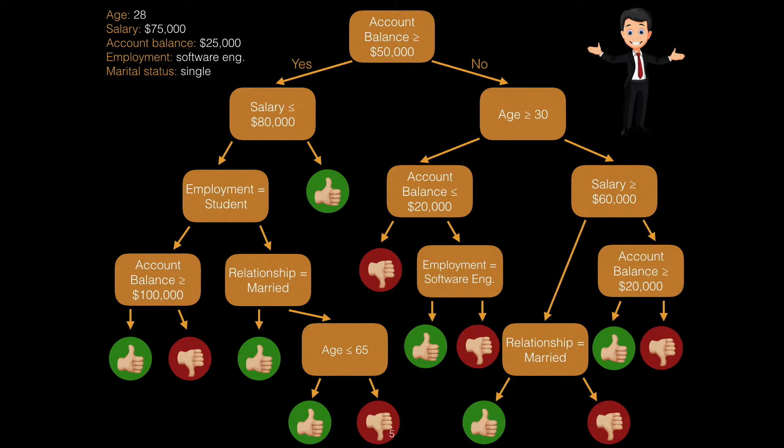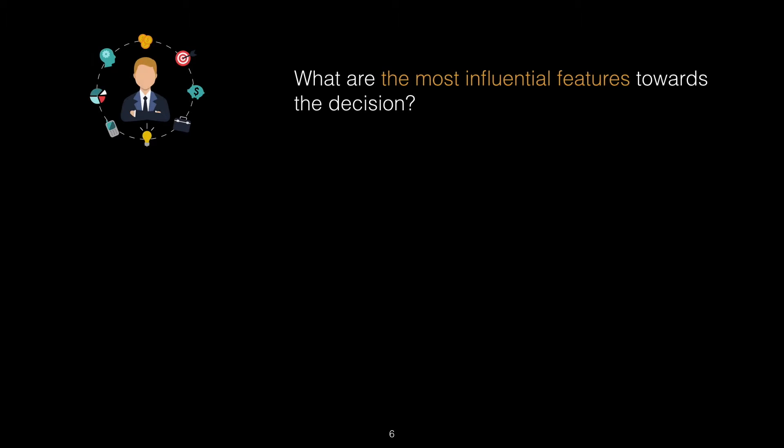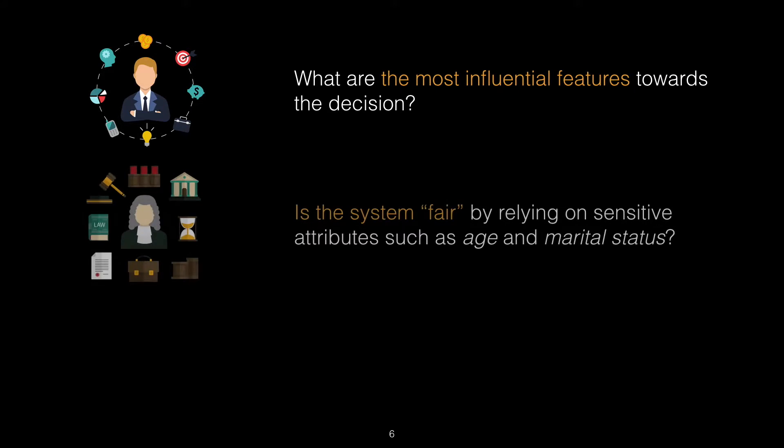With more involved models, the system typically gains the ability to accurately model the nuances in the historical training data. However, it has sacrificed its interpretability. Naturally, some questions arise. The bank may ask itself: what are the most influential features towards the decision? Regulators or a governing body may ask: is the system acting fairly by relying on sensitive attributes such as age and marital status?